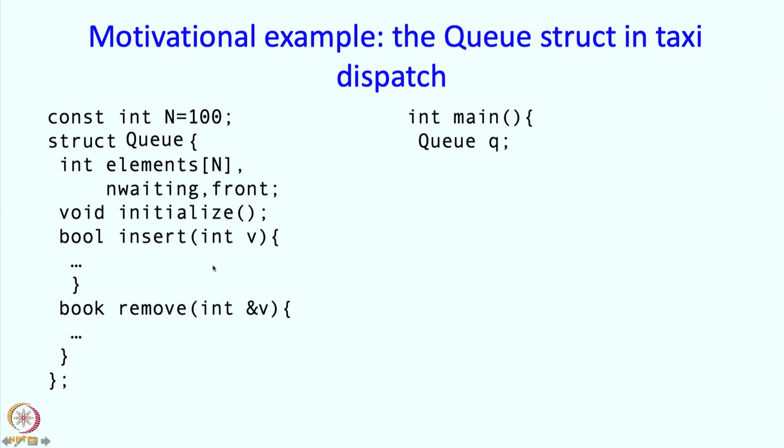The main program looks something like this. We started off by defining the queue, creating the queue, and then we called queue.initialize. Then there was a loop which I have not put up here. I want to look at these two statements.